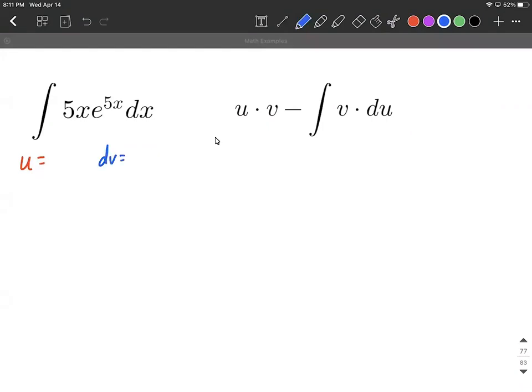All right, so our u is going to be, we want to avoid that e to the power as being our u. So I'm going to elect to use 5x. So 5x going on with the u and then the e to the power and basically everything else, all of this is going to go as our dv. So e to the 5x, dv, we'll write it out there.